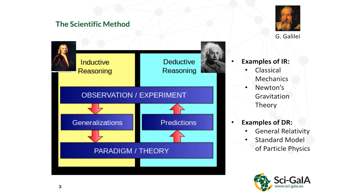What scientists have done for almost 400 years is to apply a looping procedure we refer to as the scientific method. It has two different aspects: at the beginning with Galileo Galilei in the 17th century, the inductive reasoning — observing nature. And then more recently, especially with the theory of relativity, quantum mechanics, and the standard model for particle physics, we have the deductive reasoning, where we try to extend and validate or invalidate theory with experiments.